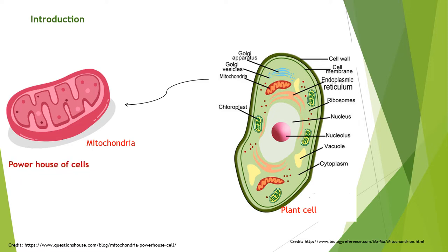The term 'powerhouse of the cell' was coined by Philip Siegwells in 1957, because the mitochondria use aerobic respiration to generate most of the cell's supply of adenosine triphosphate or ATP, which is subsequently used throughout the cell as a source of chemical energy.